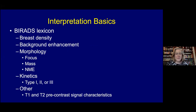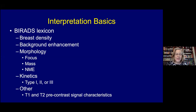Now let's think about how to interpret our images using the BI-RADS lexicon. The BI-RADS lexicon for MRI comprises breast density, background parenchymal enhancement, morphology of specific findings, and kinetics. We do the dynamic acquisition because we're looking for lesions with neovascularity or leaky blood vessels—characteristic of malignancies—with different kinetic patterns more or less associated with cancers. Pre-contrast T1 and T2 imaging signal characteristics can also be helpful in honing your differential as you put together your report.